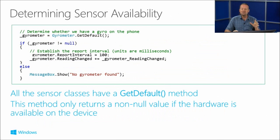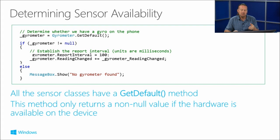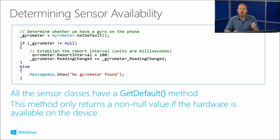First, you have to make sure that a particular sensor is available on the device. So the first thing you do is call the get default method of any of these particular sensors - they all have this. If the sensor is available and present on that device, you will get an object back. If it's not been installed by the manufacturer, then that will return null. So that's essentially the first thing you must always do with any of these sensors.